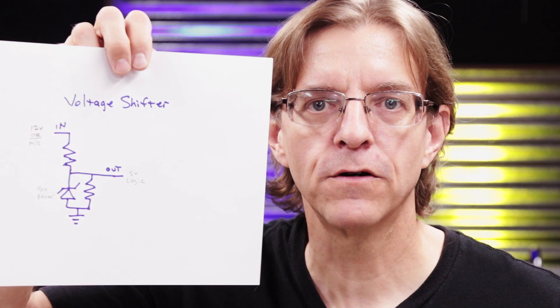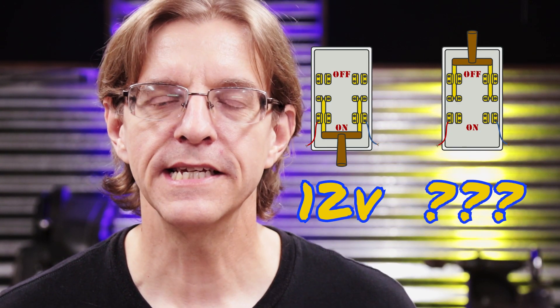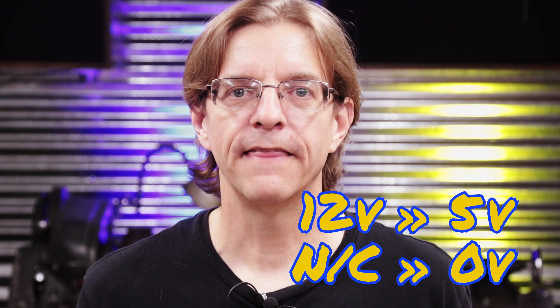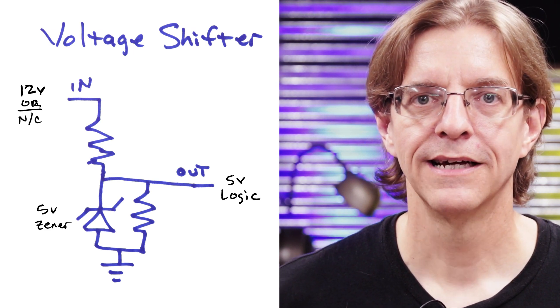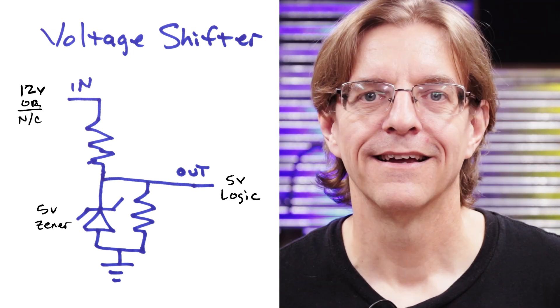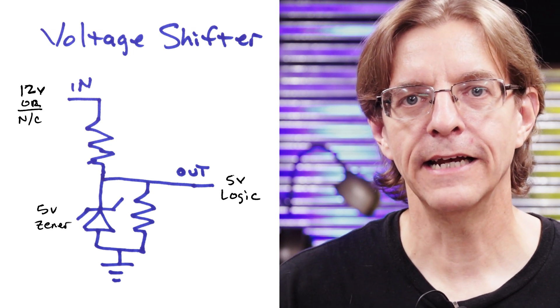Next, let's look at the schematic for the voltage shifter since it's a little bit unique. The issue is the signal coming from the switches is either 12V or nothing. 12V is too high for the 5V logic circuits. And the logic gates can't cope with the floating non-connected switch when it's turned off. So the 12V on-off signal needs to be converted to 5V that is either a voltage or ground. To do this, I use a 5V Zener diode in a voltage regulator configuration. This changes the 12V to 5V. Next, I put a resistor to ground in parallel. This ensures that when there's no connection, the signal goes to ground instead of floating at an indeterminate value.